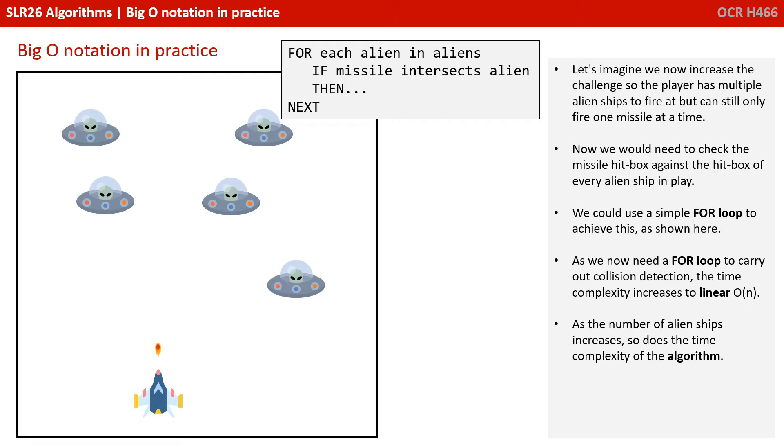Let's imagine we now increase the challenge so the player has multiple alien ships to fire at, but can still only fire one missile at a time. Now we'd need to check the missile hitbox against the hitbox of every alien ship in play. And we could use a simple for loop to achieve this as shown here.